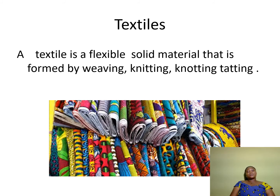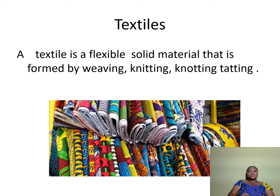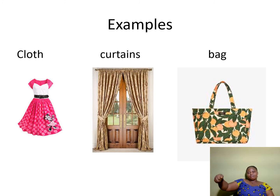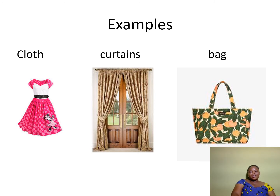We are coming to the next one: that is textiles. A textile is a flexible solid material that is formed by weaving, knitting, knotting, or tatting. On the screen you can see some textiles — that is what we call cloth. These are some examples of textiles: we have cloth for making dress, curtains to decorate our rooms and windows and doors, and bags. All these things are made from textiles.